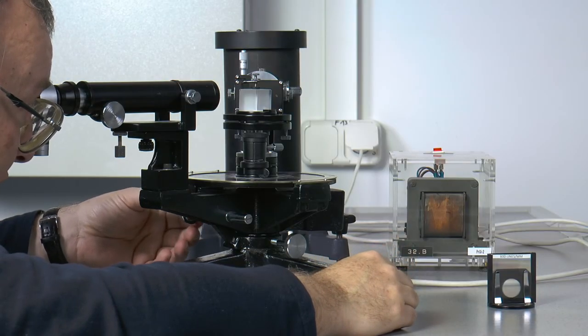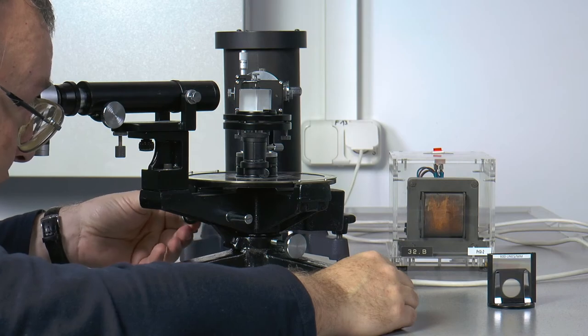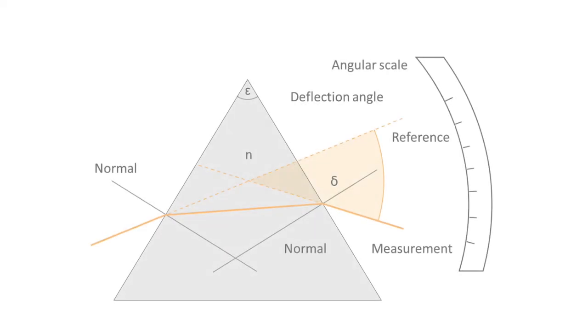The recorded values for the deflection angle are corrected by the initial position. For the case of the minimum deflection, the refractive index of the prism can be determined by the deflection angle and the angle of the deflecting edge of the prism. The resulting values for the refractive index can be plotted as a function of the wavelength of the respective spectral line to demonstrate the dispersion.